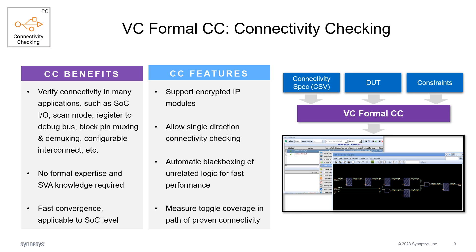It also measures toggle coverage in the paths of proven connections to assist with coverage closure. VC Formal CC app is easy to set up. It takes the design, the connectivity spec, and the constraints as input and performs exhaustive formal analysis to see if the expected connections exist. Users don't need formal expertise or any SVA knowledge to use this app.